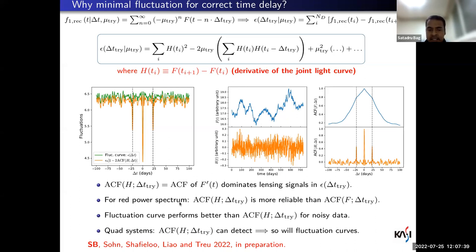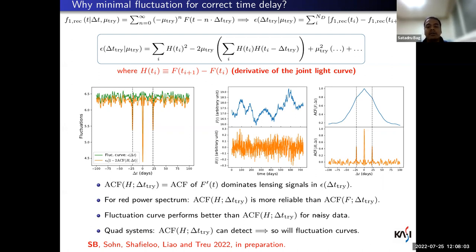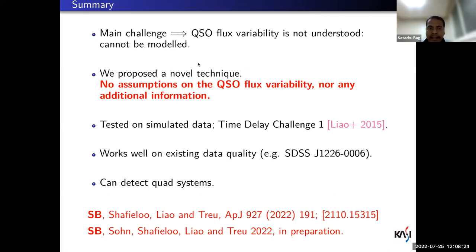The lensing signal comes from the ACF of the derivative. For a red power spectrum — as long as quasar flux variability has temporal correlation — the ACF of the derivative performs better than the ACF of the joint light curve itself. Since the fluctuation curve is based on the ACF of h, it also performs better. On noisy data, the full fluctuation curve outperforms even the ACF of the derivative because of the higher-order terms, and both can detect quad-lens systems even though the analysis is formally based on a two-image model.